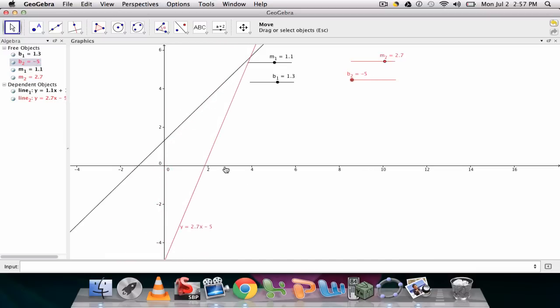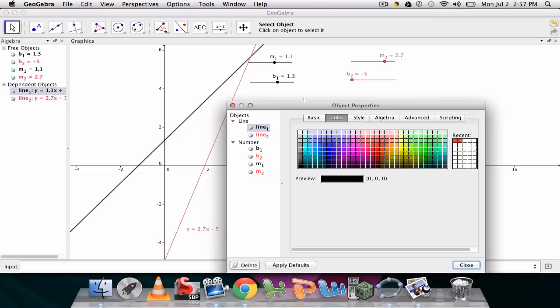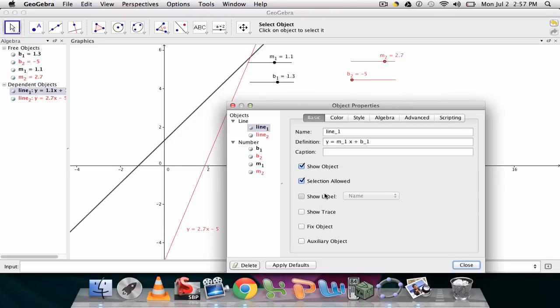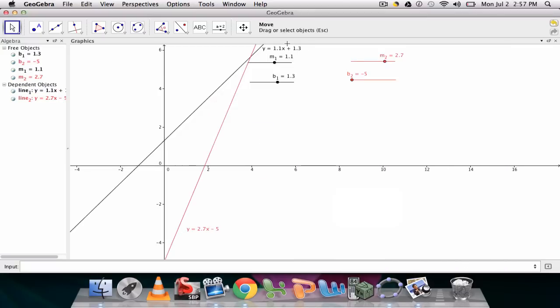Now the equation is down here. You can move that where you want. And then at least for the second line here, also show the label the value. So that we can see the equations of each line as we're manipulating them. As we're playing with them.